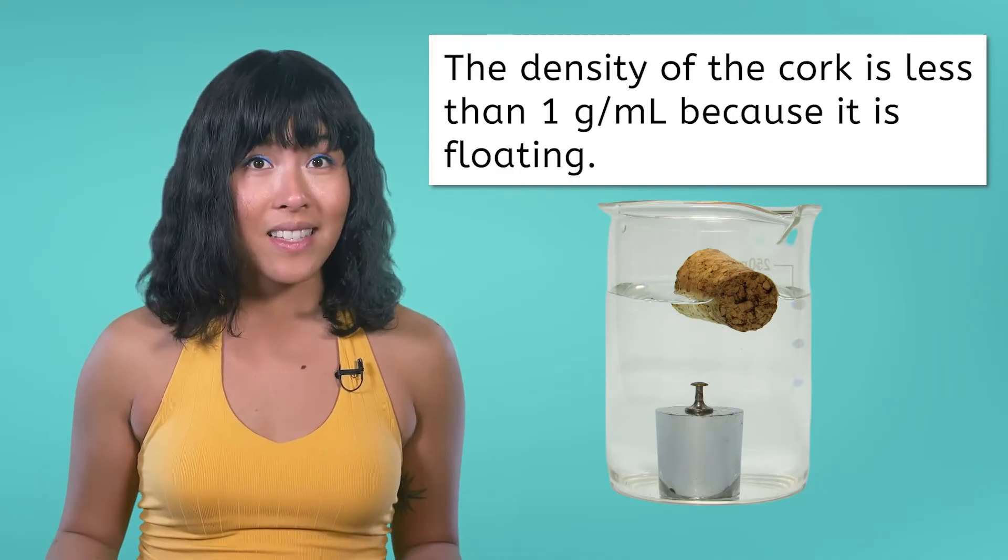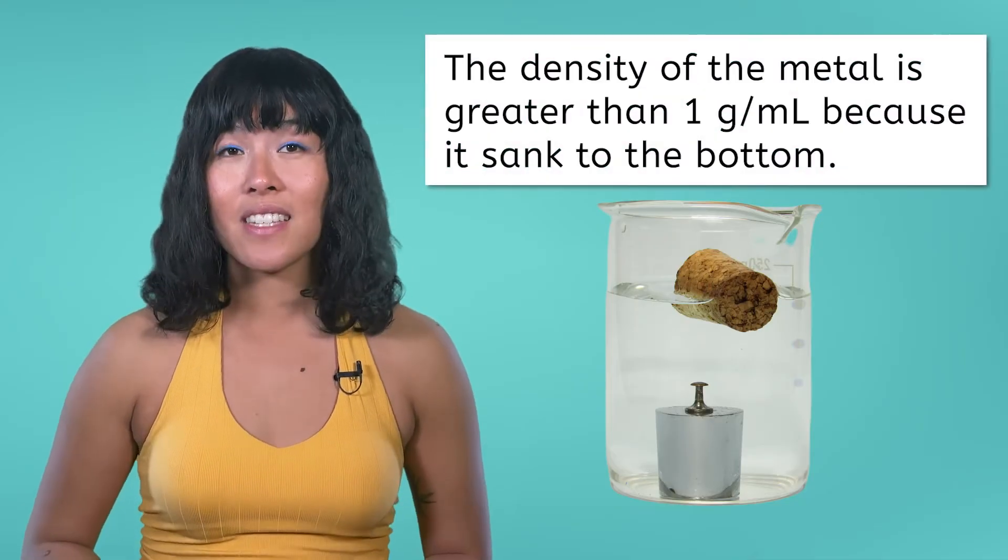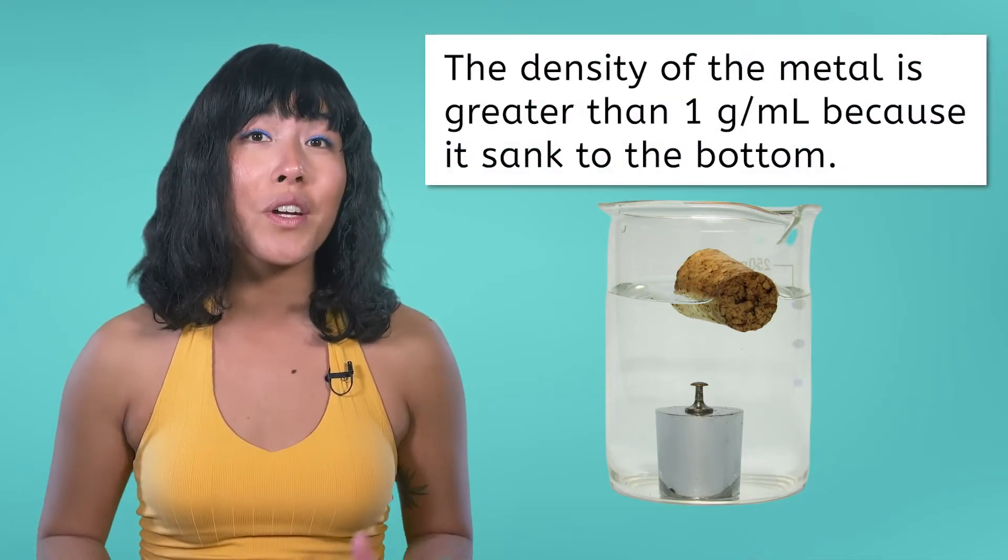If an object sinks, like the metal in this image, the object's density is greater than the density of water, or greater than one gram per milliliter. This same comparison method can be used to compare the density of liquids as well. When liquids separate into distinct layers, they separate with the highest density liquids at the bottom and the lowest density liquids at the top.